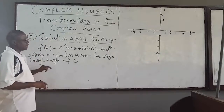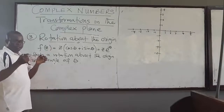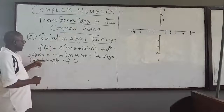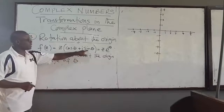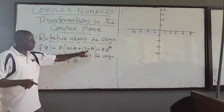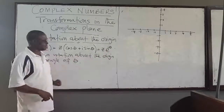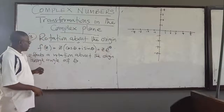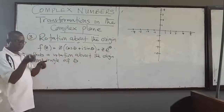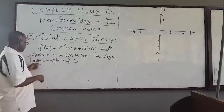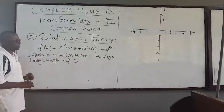Now we want to look at rotation about the origin. So if you have a point z in the complex plane and you multiply it by the expression cos(θ) + i·sin(θ), which can also be represented as e^(iθ) from Euler's formula, this represents a rotation about the origin through an angle of θ.